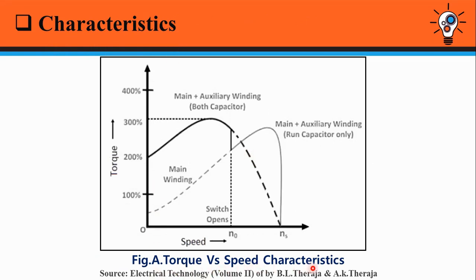Figure-A shows the torque-speed characteristics of Capacitor Start, Capacitor Run Induction Motor. The lower curve, which starts from below 100% torque, is for the condition when only the run capacitor CR is in the circuit with both windings. The upper curve, which starts from 200%, is for the condition when both capacitors are connected in the circuit with both windings. In this condition, high starting torque is produced due to the increased capacitance. The auxiliary capacitor CS gets disconnected when the motor reaches a particular speed, shown as N0 in the figure. So, a better performance is achieved using a two-value capacitor motor than a traditional single-value capacitor start, capacitor run induction motor.